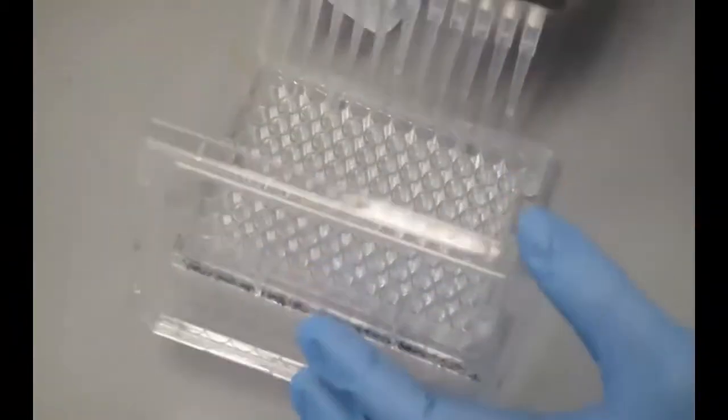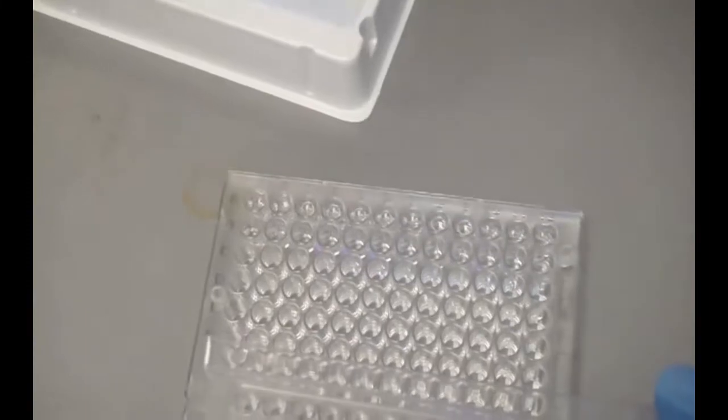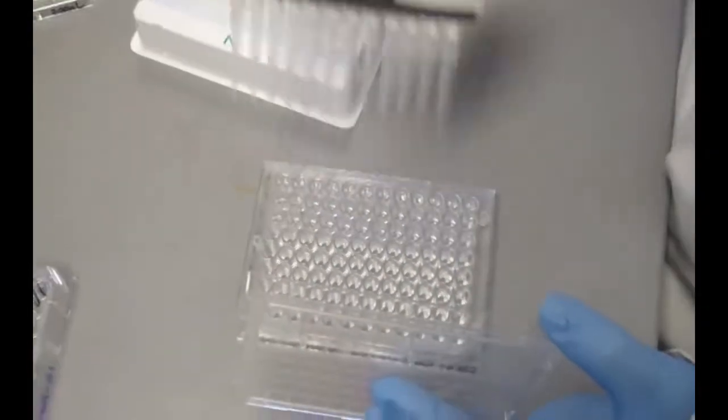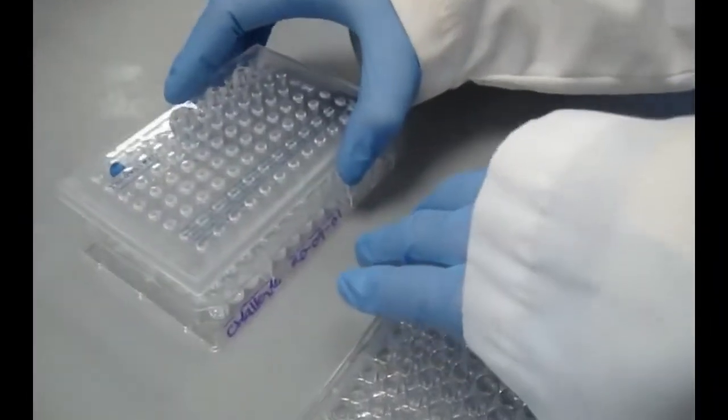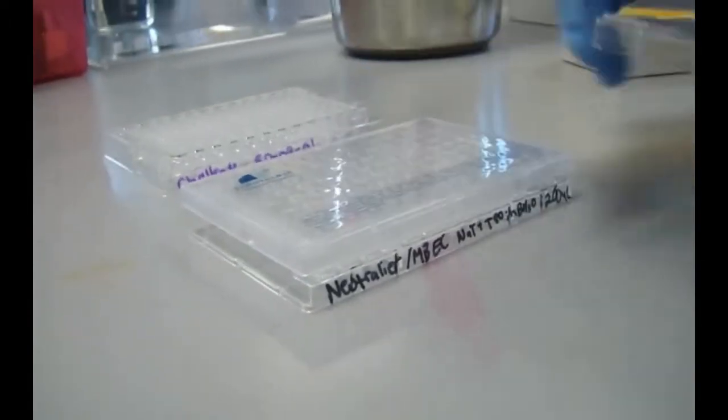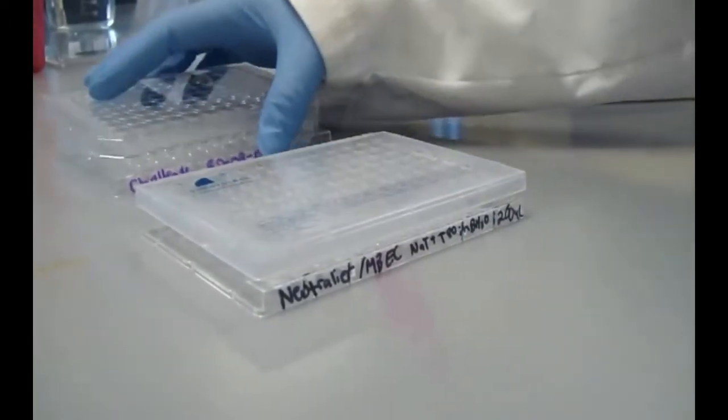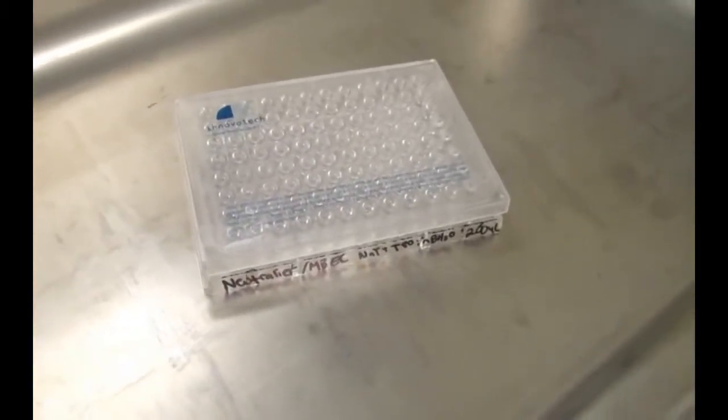The recovery plate is prepared by adding 200 microliters of appropriate neutralizer to each well of a new sterile plate. After the appropriate challenge time, the peg lid is transferred to the recovery plate. The whole device is sonicated for 30 minutes to remove the attached biofilm.